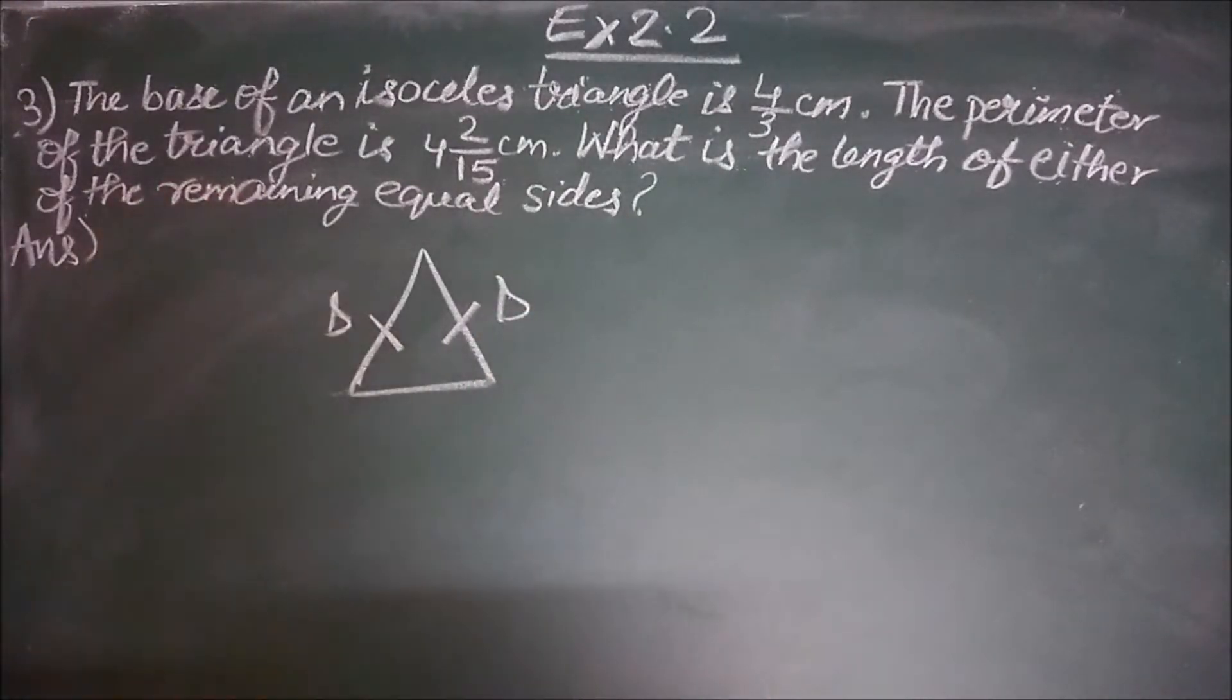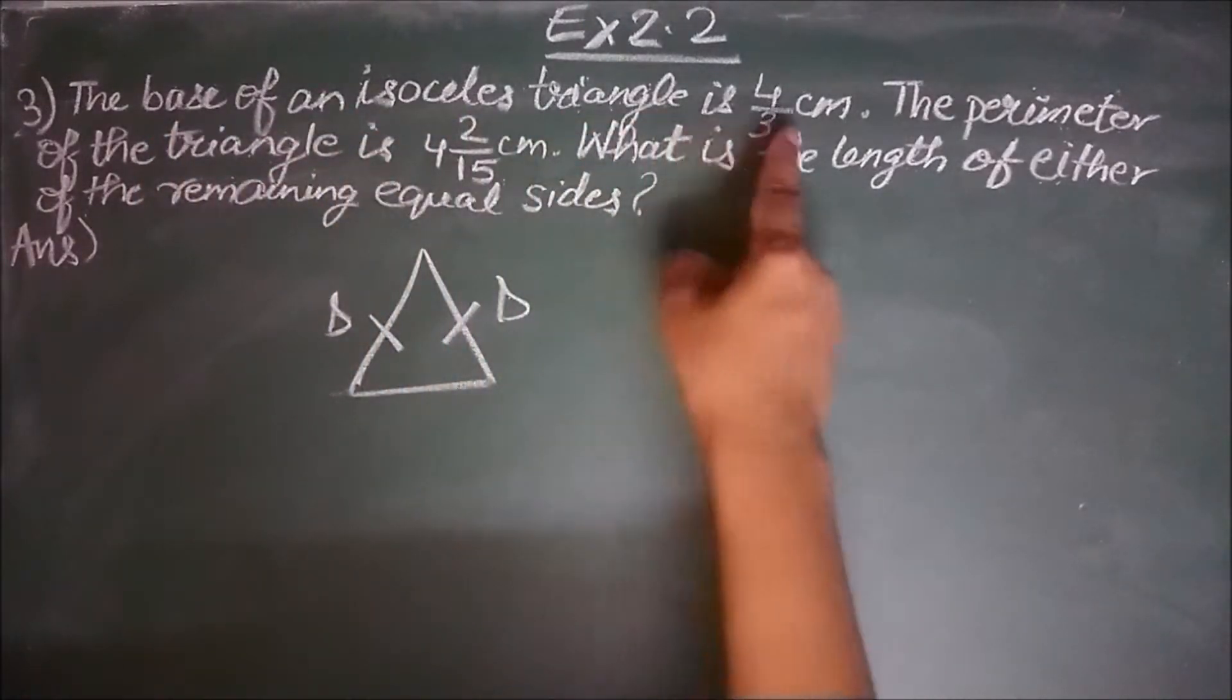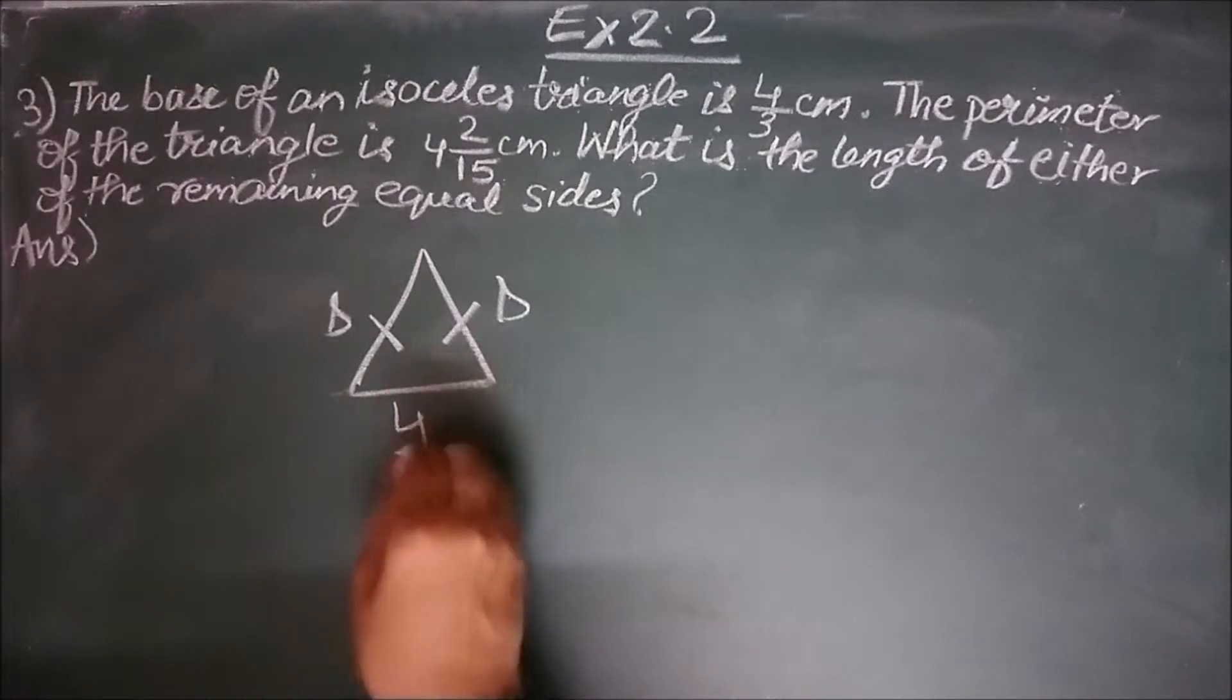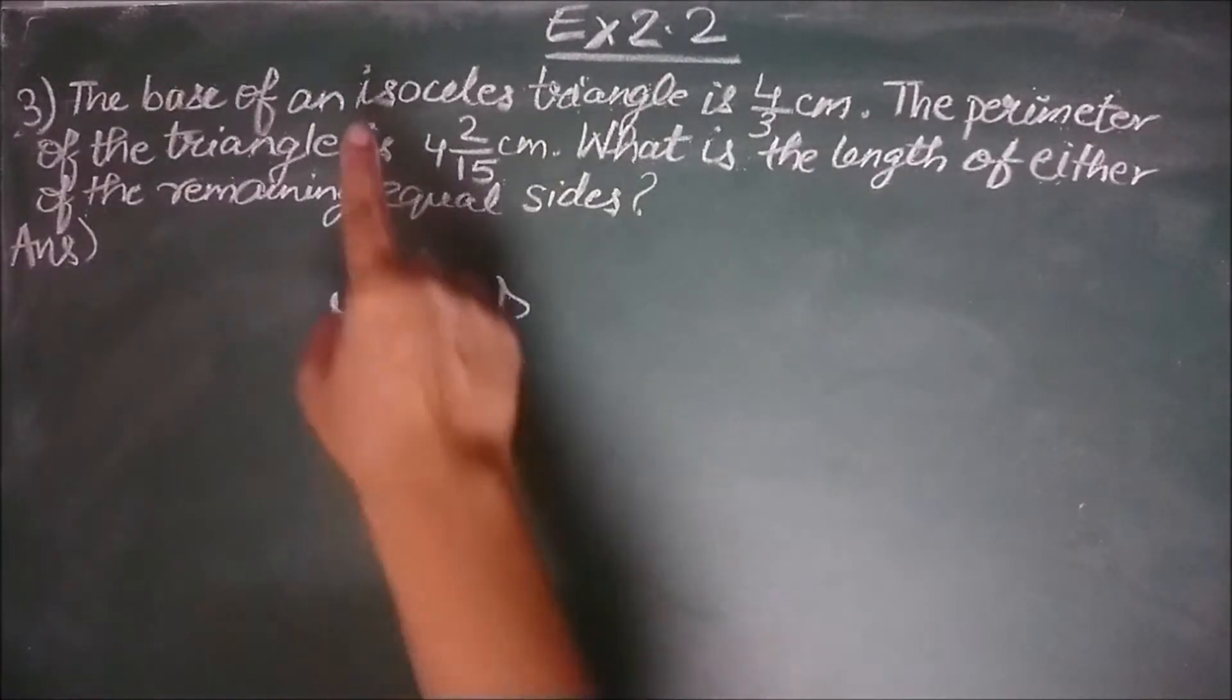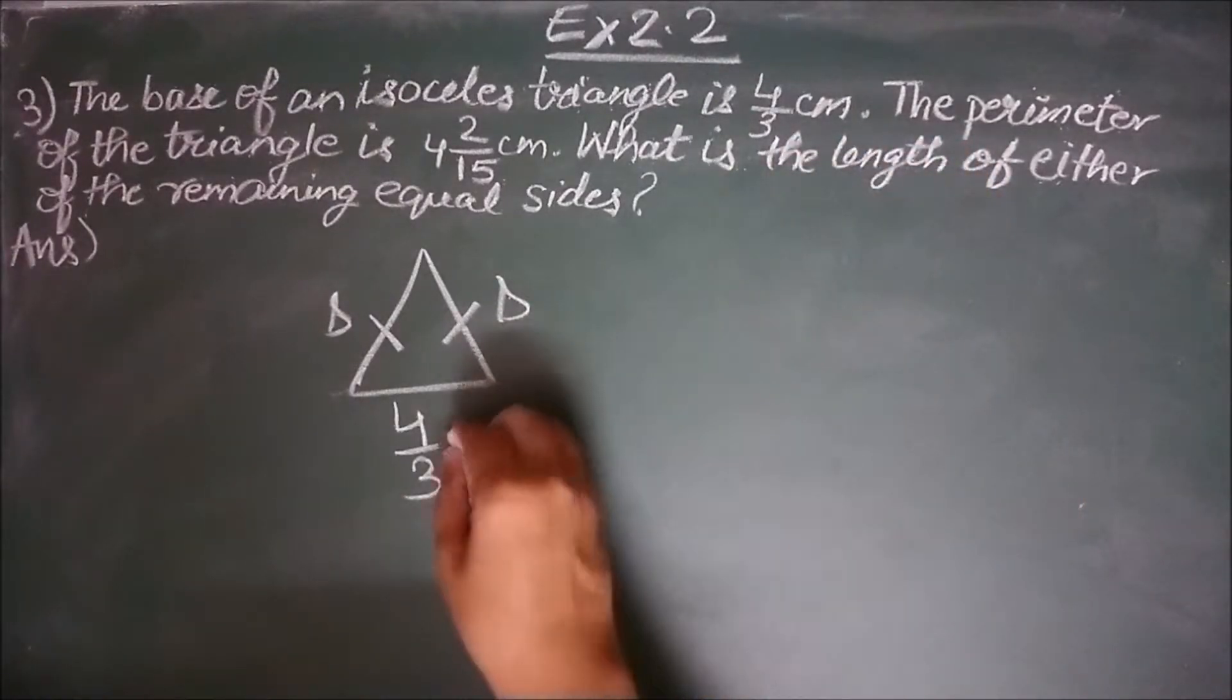Let us read the first statement. The base of an isosceles triangle is 4 by 3 cm. We are talking about the base of the triangle, that is this, and not the sides which are equal in length. We are talking about only one side which is unequal in length, whose length is unique. And it is 4 by 3 cm.